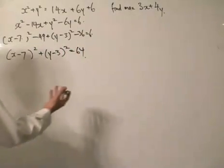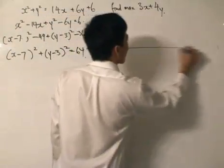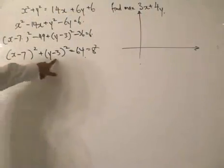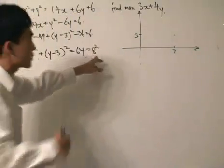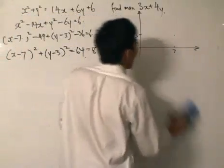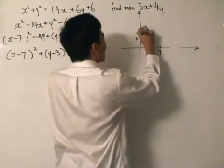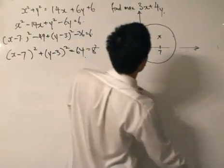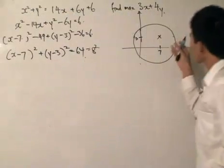That's 64, which means it's 8 squared. So it's a circle, and it's best that we just graph out the circle to get a good grip of things. The center is 7 and 3 — x is 7, y is 3 — and the radius is 8.